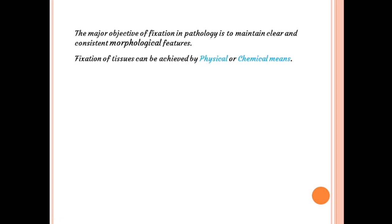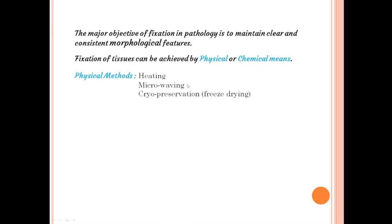Fixation of tissues can be achieved by physical or chemical means. Physical methods include heating, microwaving, and cryopreservation or freeze drying. Chemical fixation is usually achieved by immersing the specimen in the fixative, which is called immersion fixation.